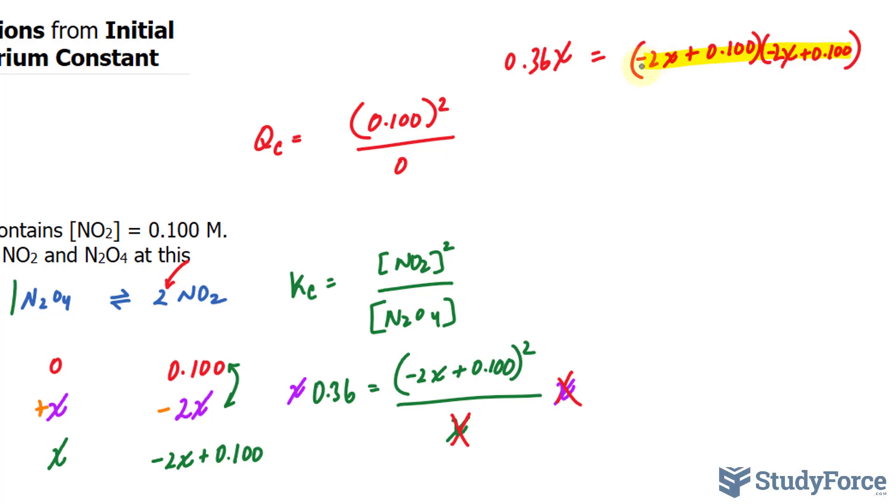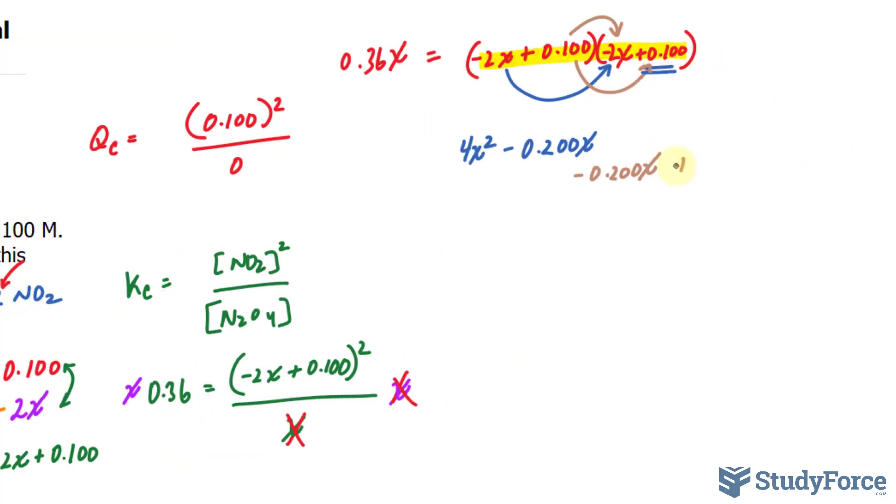And if I expand it correctly, I have negative 2X times negative 2X. That's positive 4X squared. Negative 2X times this number gives us negative 0.200X. And then moving on to this number, multiply that by negative 2X. It's the same thing. And 0.100 times 0.100 gives us 0.0100. So positive 0.0100. The left side of this equation stays the way it is.